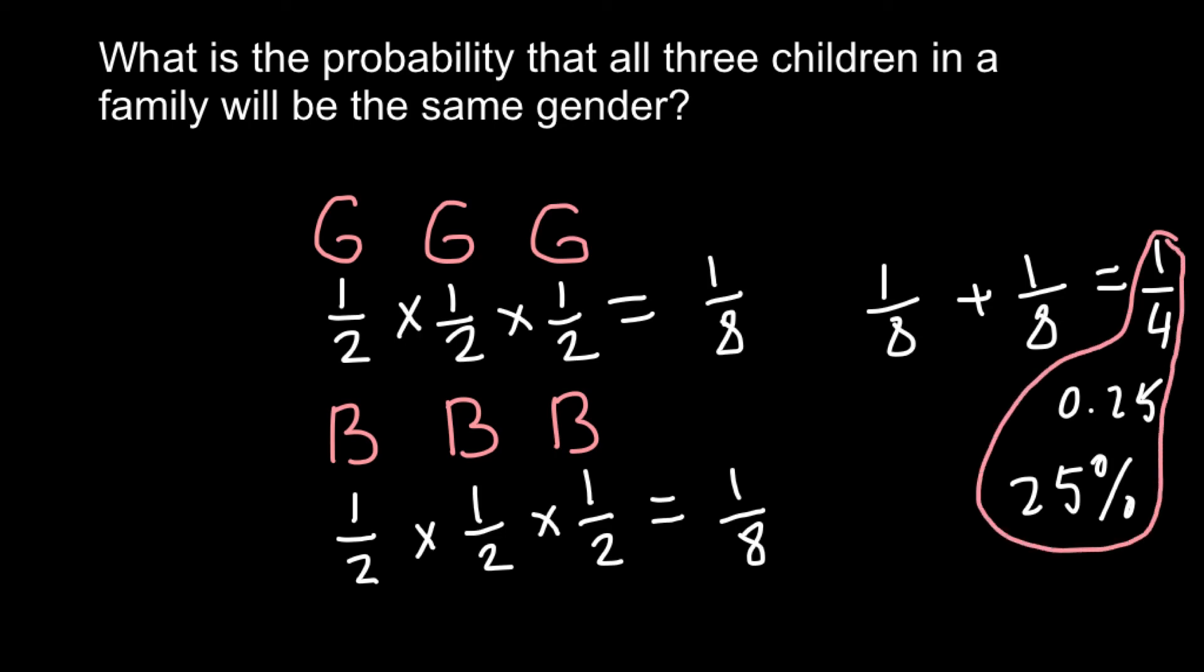And once again, when you have independent events that have to happen simultaneously, we use the product rule. And when we have two mutually exclusive events, we have to use the sum rule. Just knowing these two rules, you can solve many, many genetics problems. So this is very important to understand them and be able to use them.